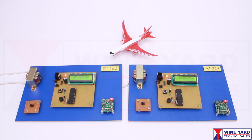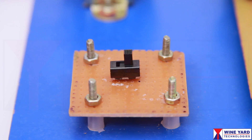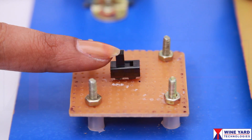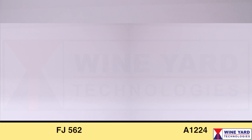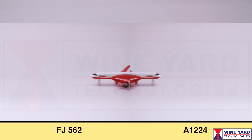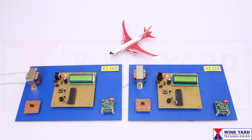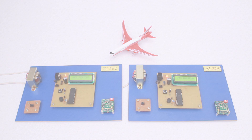Let us take the condition of aircrafts that are away from each other. I am sliding these switches to simulate the aircraft away status. In this case, the ZigBee modules are not in communication and you can observe the display showing a safe condition.